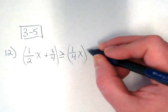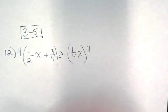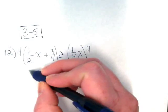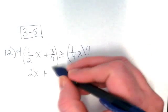So we're just going to do 4 times 1 divided by 2 would give us 2x plus this 4 and this 4 cancel giving us just 3 greater than or equal to x.